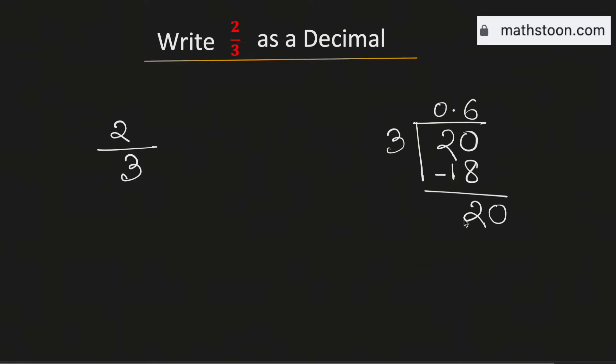Now we need to put 0 here. Again 3 times 6 is 18 and if we subtract we get 2.